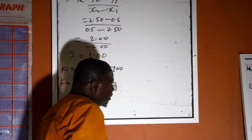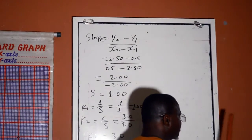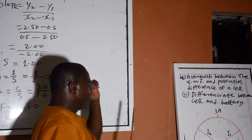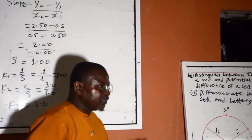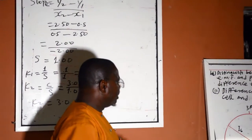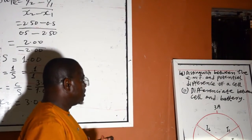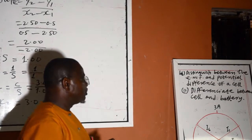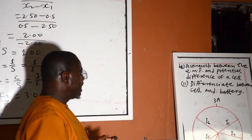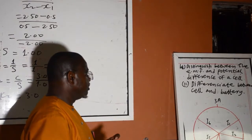Then we are directed to distinguish between the EMF and potential difference. EMF is the total energy available in the battery or cell when the circuit is open. Potential difference is the average energy in the cell when the circuit is closed.